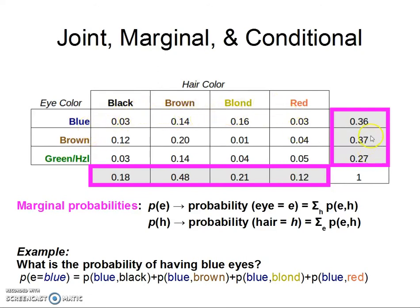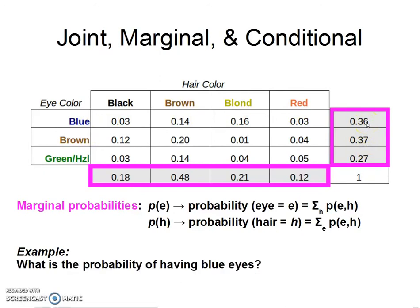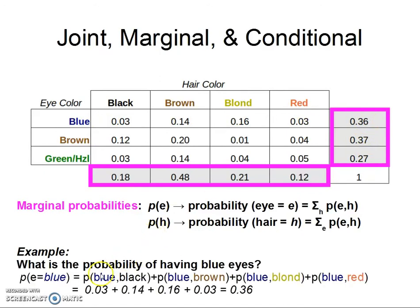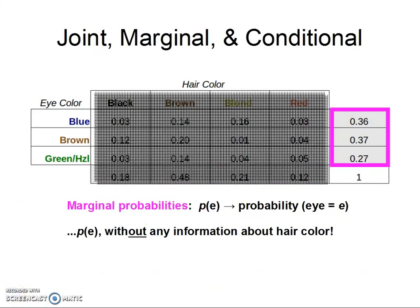Notice that the marginal probability of one variable is not affected by the other. In this case, I've blocked out all the information about hair color. It doesn't matter because when we're thinking about the margin of eye color, we have summed across hair color, so all that matters is this right here in the margins. We don't know anything about hair color.